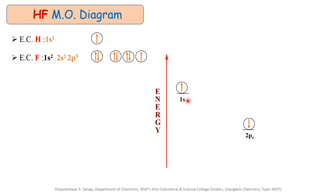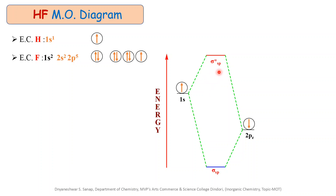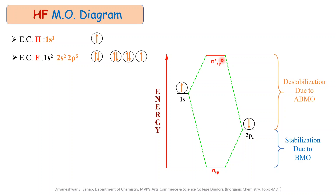Similarly, the atomic orbital of the less electronegative element contributes more to the formation of the antibonding molecular orbital and less to the bonding molecular orbital. This causes the separation of delta-plus charge and delta-minus charge on the atoms, which we see as a dipole. When these two atomic orbitals combine together, they form two molecular orbitals. The lower energy orbital is called the bonding molecular orbital and the higher energy orbital is called the antibonding molecular orbital. The lower energy bonding molecular orbital is called sigma-sp bonding molecular orbital and the higher energy one is called sigma-star-sp antibonding molecular orbital. The bonding molecular orbital stabilizes the molecule while the antibonding molecular orbital is destabilizing.